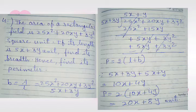Now we find the perimeter. The perimeter of a rectangle equals 2 times (length plus breadth). Length is 5x plus 3y and breadth is 5x plus y. Adding them gives 10x plus 4y. Multiplying by 2 gives the perimeter answer: 20x plus 8y units.